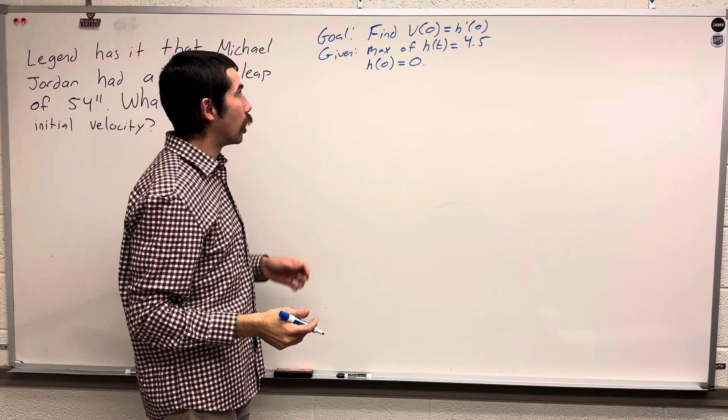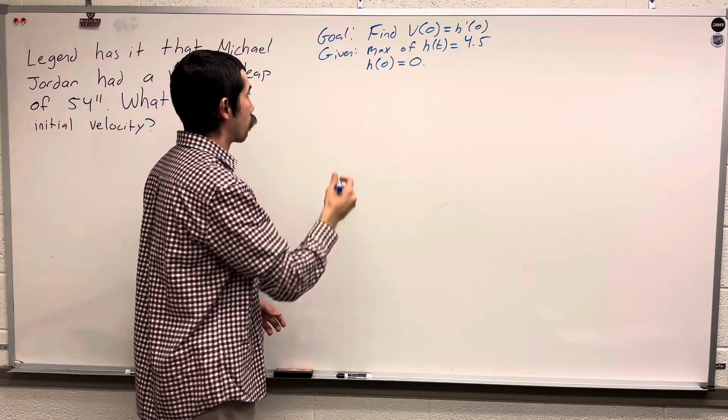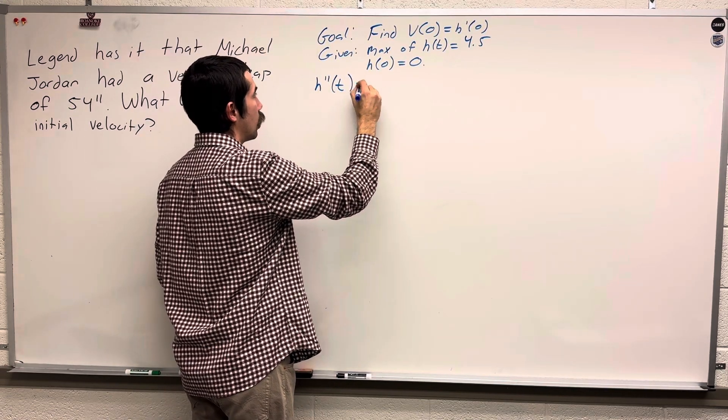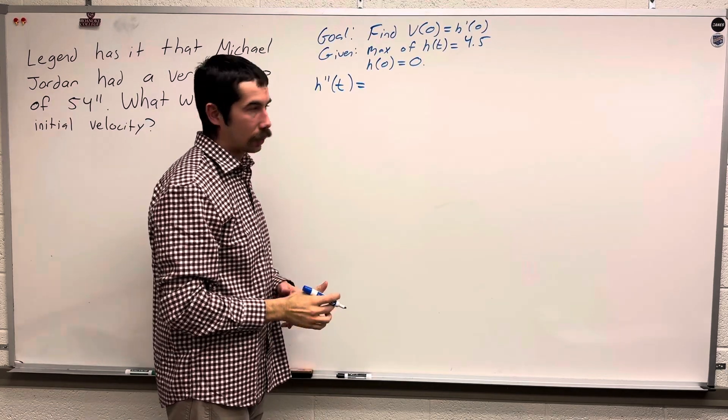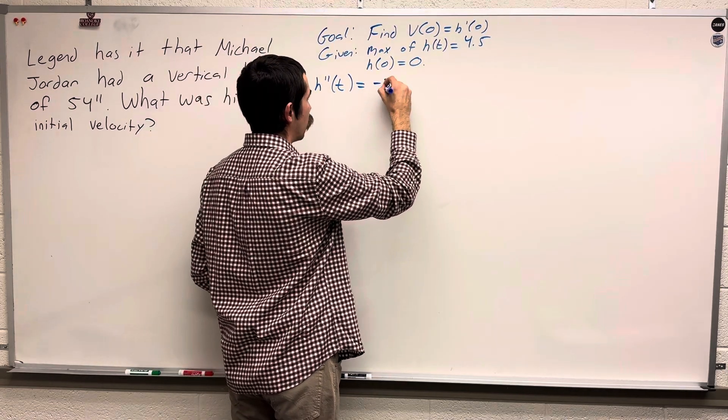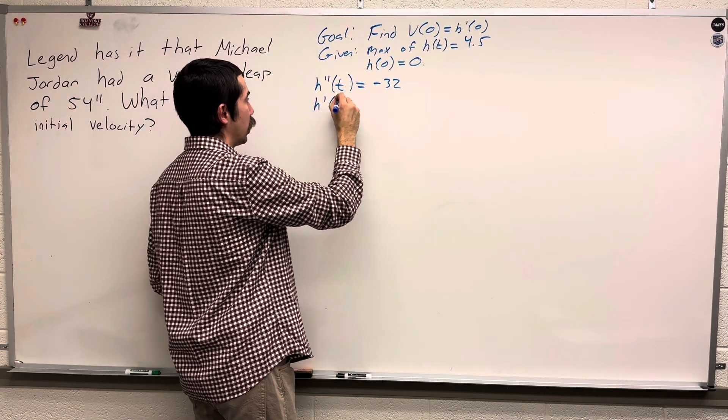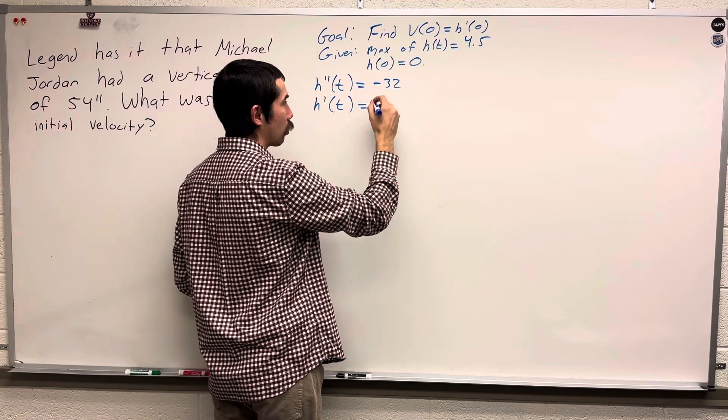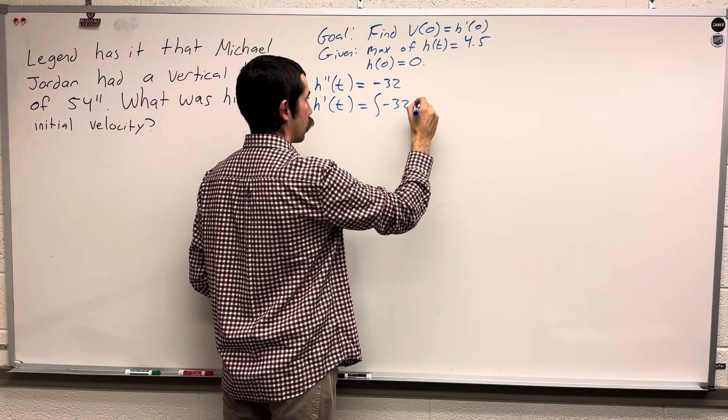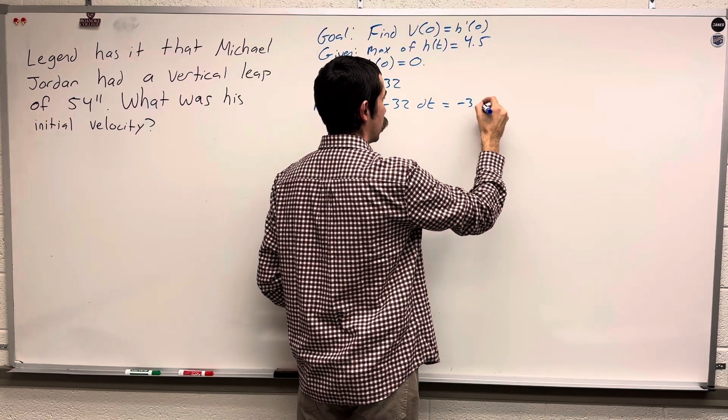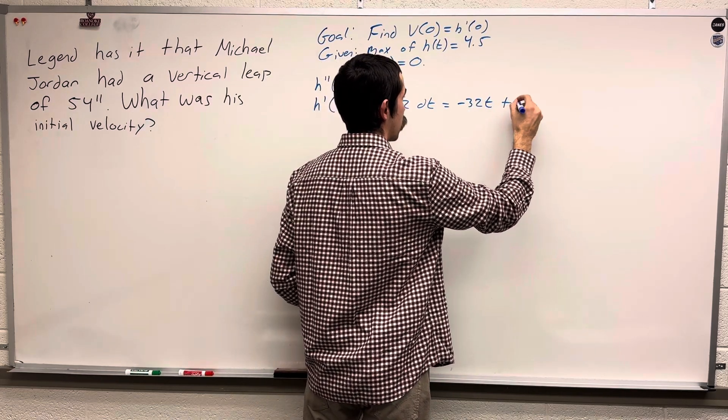From this it's really not too hard to solve this problem. So we know h double prime of t, since we're using imperial units, is negative 32 feet per second squared. So that tells us that h prime of t is the integral of this.